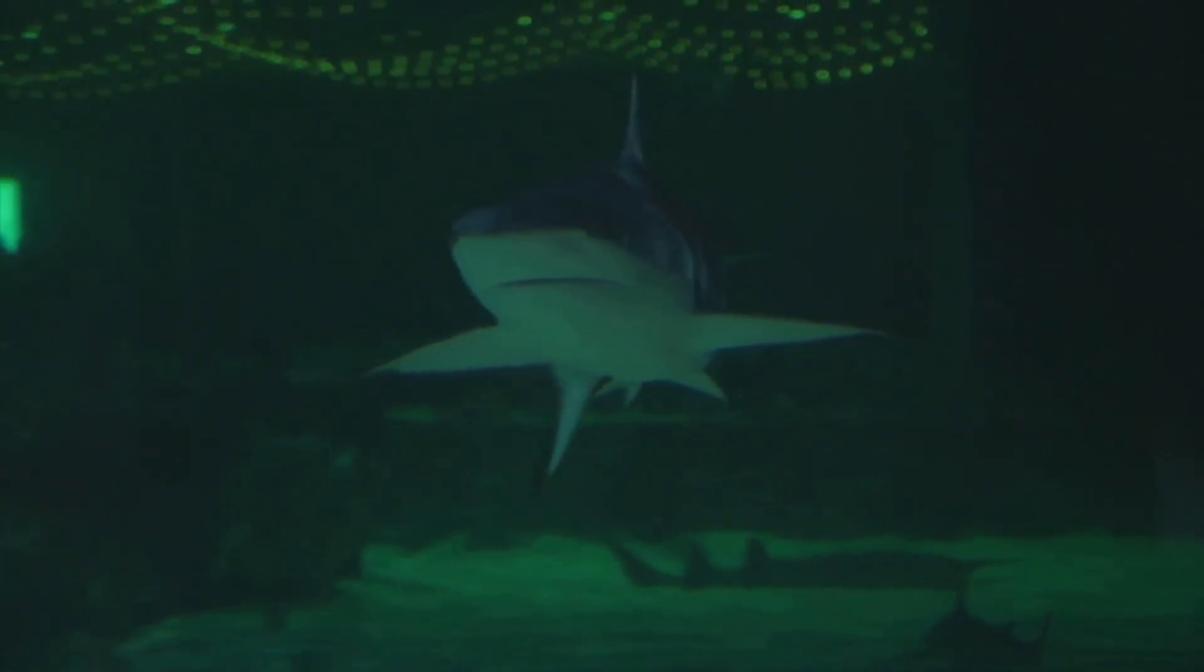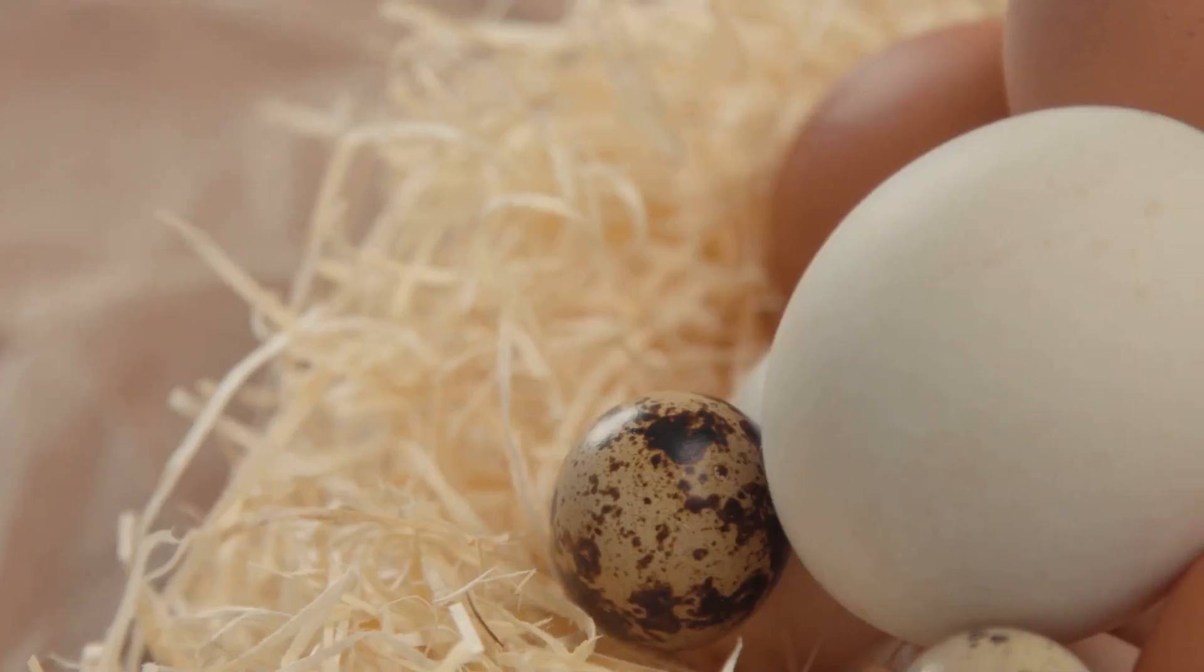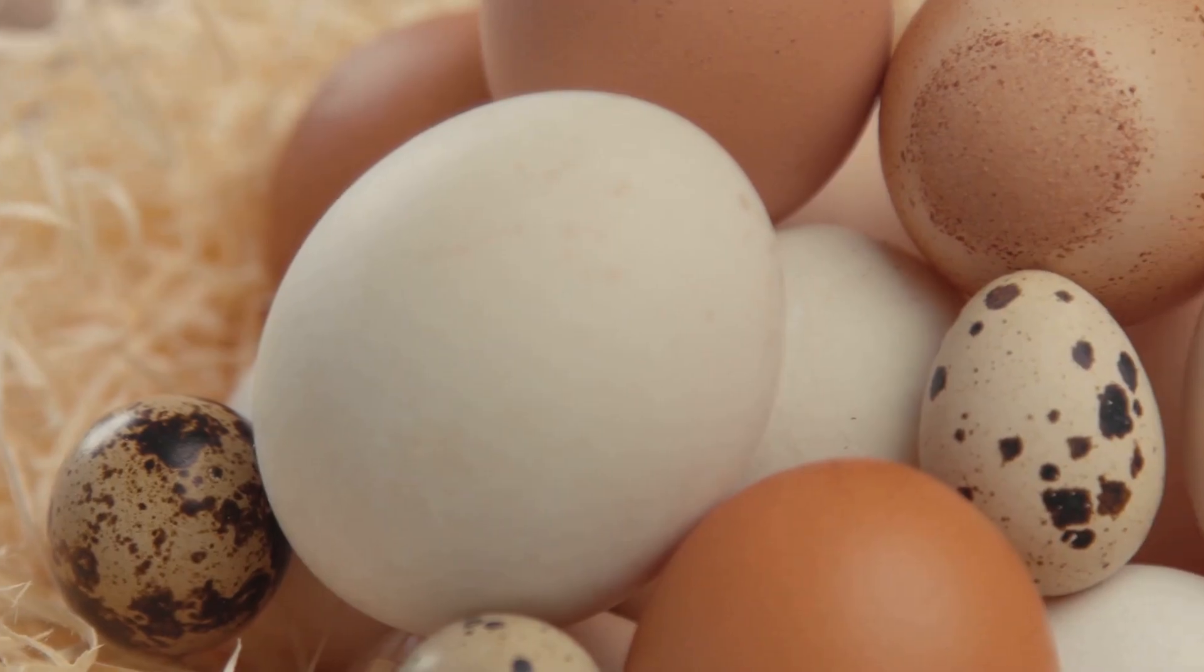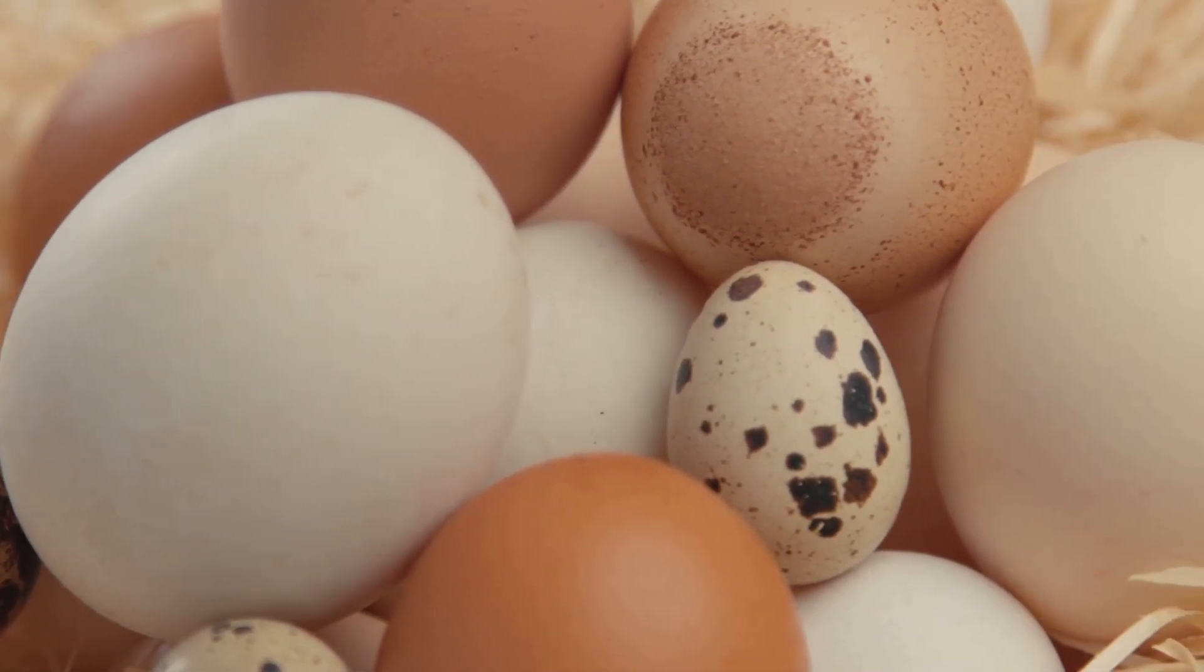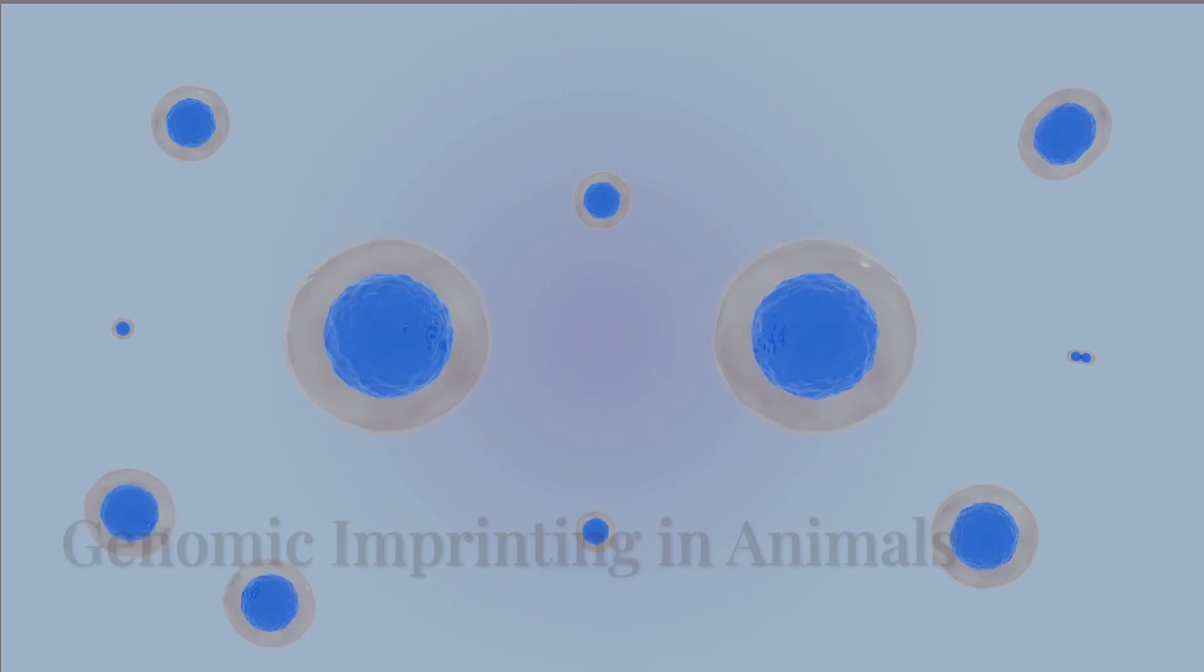Sharks have shown rare cases of parthenogenesis, usually when in captivity. With birds, sometimes unfertilized eggs will start to develop, but the embryos almost never survive. These species don't rely on genomic imprinting, which means they can develop viable offspring from just one parent's DNA.